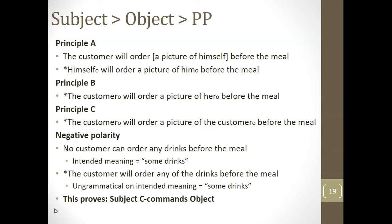We can also use negative polarity: 'No customer can order any drinks before the meal' is grammatical; removing the negation — 'the customer will order any of the drinks before the meal' — becomes pragmatically odd, losing the negative polarity reading. This shows that the subject C-commands the object. So we've taken the previous material, applied it to the constituency structure, and obtained a coherent hypothesis. Now let's look at the relationship between the direct object and the prepositional phrase.